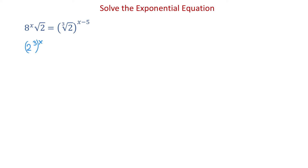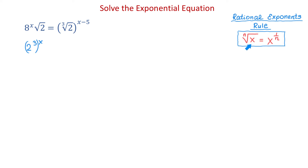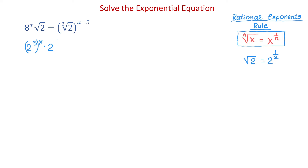Next, we will use the rule for rational exponents to rewrite square root of 2. This rule tells us that we can rewrite the nth root of x as x to the power of 1 over n. According to this rule, we can write square root of 2 as 2 to the power of 1 over 2, because the exponent of 2 is 1 and the index is 2, so the exponent is 1 over 2. Then in our equation, in place of square root of 2, we will write 2 to the 1 half.